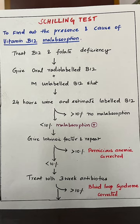If the urine contains more than 10% of the oral radiolabeled B12 administered, there is no malabsorption. If it is less than 10%, malabsorption is confirmed. In that case, give intrinsic factor and repeat the test.